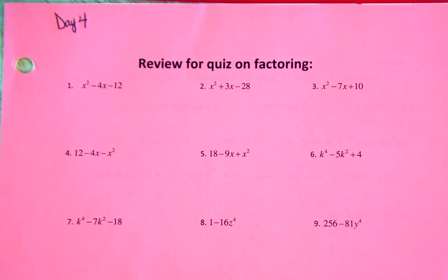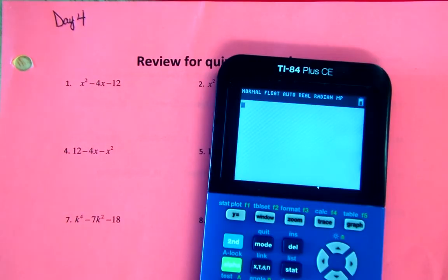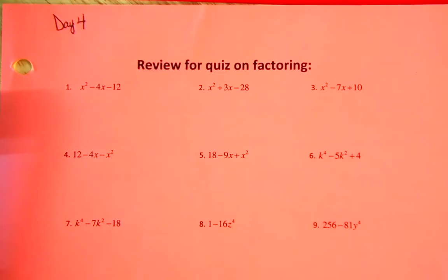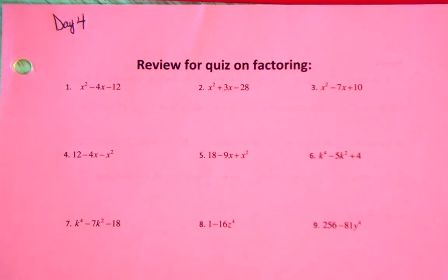Let's do some factoring review for our quiz next class. Have your calculators handy — we can use them to check. If you need to skip to question five because you didn't know how to do it, go ahead, or you can just follow along. When we're factoring, the first thing we want to do is check for a GCF.